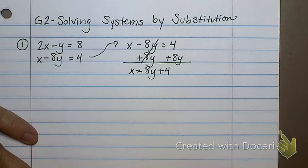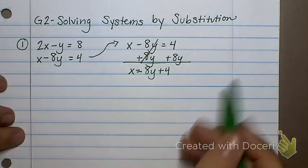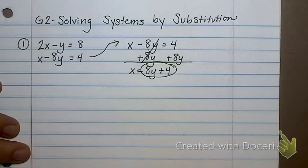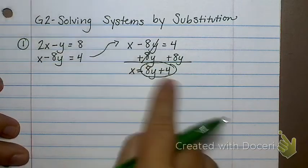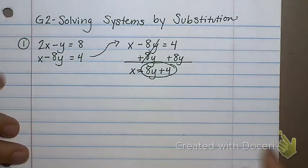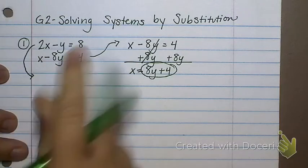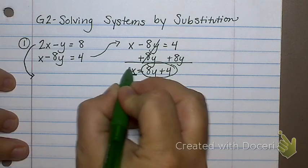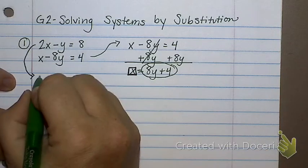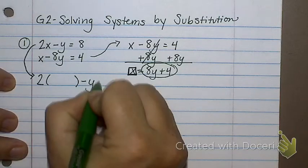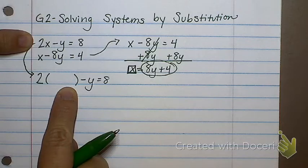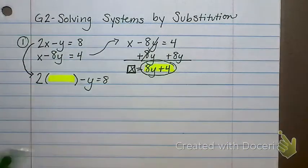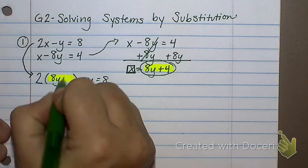So what did I do here? I just got x by itself, and I now know that x equals 8y plus 4. So that means if I see an x, I can replace it with 8y plus 4, because that's what it equals. So I'm going to take the other equation now, not the one I just used, the other equation, and I'm going to take out the x from that equation. So that equation is 2x minus y equals 8. I took out the x and I put parentheses. What do you think I'm going to put in that parentheses? 8y plus 4. That's my substituting part. I took out the x. I'm replacing it with 8y plus 4.